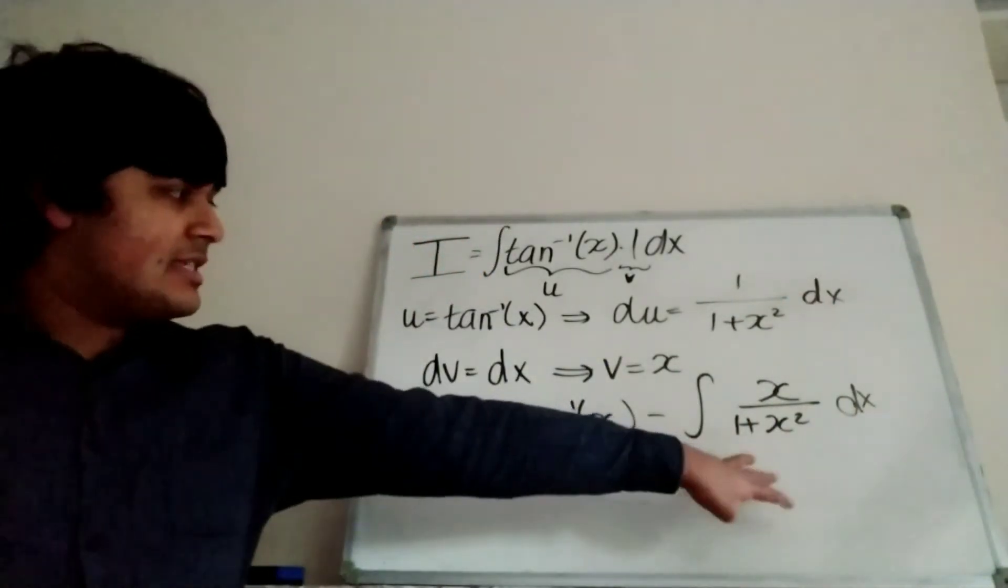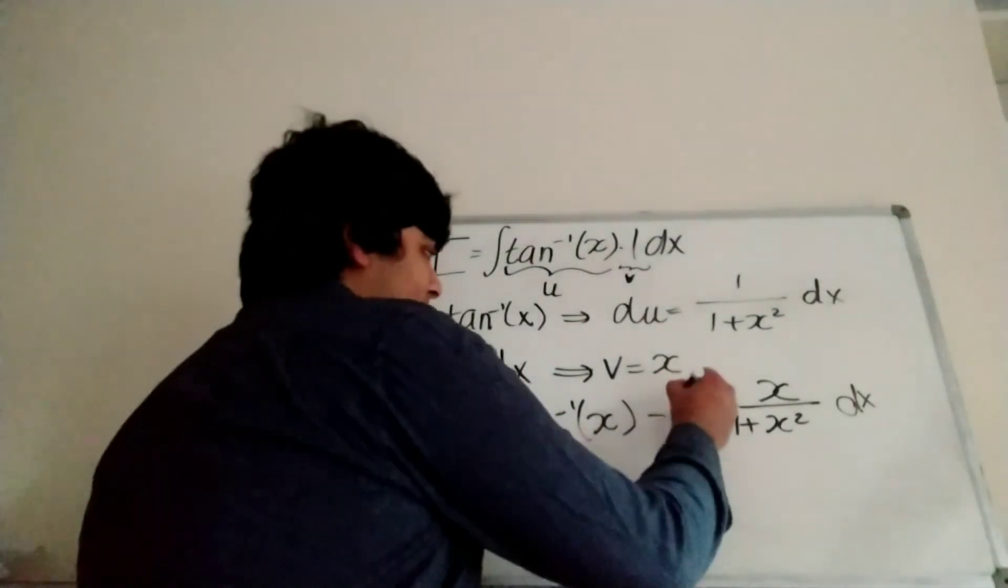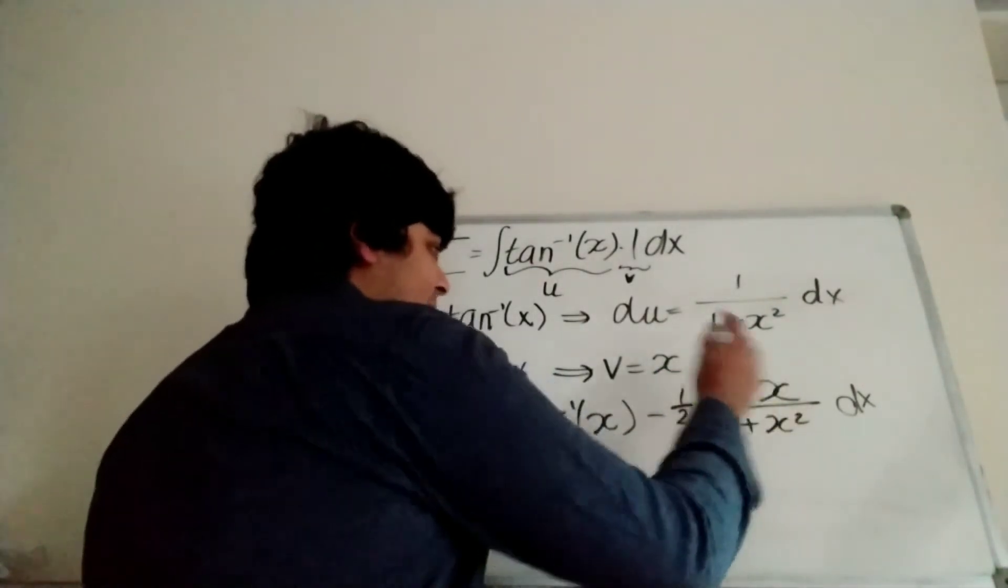So now what we have to do is just evaluate this integral here. But this is in quite a nice form. Firstly, what I want to do is just multiply by half here and then put a 2 here, so of course they cancel.